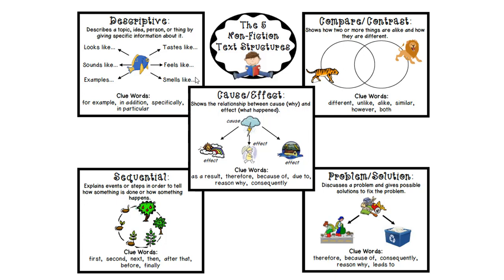Within those text structures, there are clue words to help you find what type of text structure it is. In description, there's going to be words like 'for example' and 'in addition.' Compare and contrast is going to have words like 'unlike,' 'alike,' 'similar,' 'both,' and 'however.' In cause and effect, you're going to see 'as a result,' 'therefore,' 'because of,' and 'due to.'